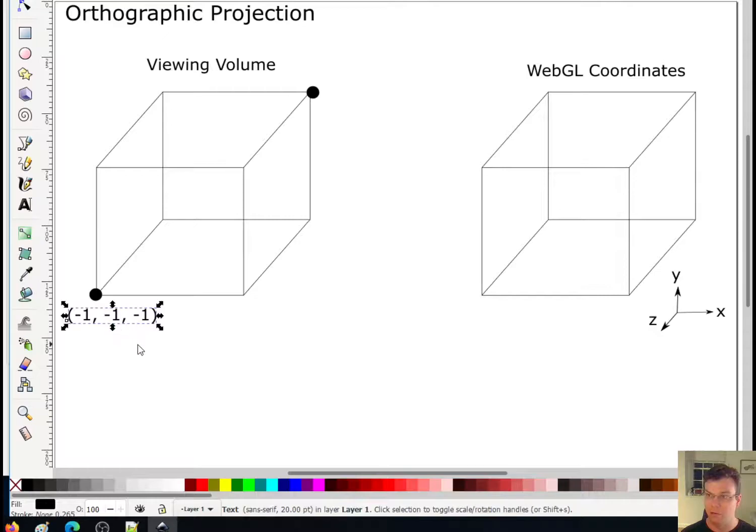So in this viewing volume, negative one is actually towards us in z. Okay, so then the opposite corner up here is going to be positive one in x, positive one in y, and positive one in z. And just to give one more example so that we're totally clear, this coordinate here would be negative one in x, negative one in y, and positive one in z.